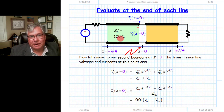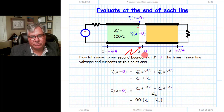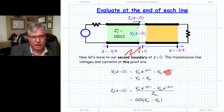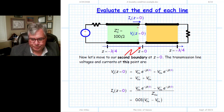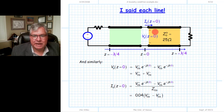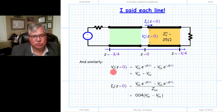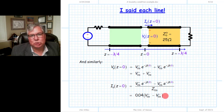Now let's move to the other end of the first transmission line and determine total current IA and total voltage VA at z equals 0. We take our telegrapher equation solution for the first transmission line and evaluate at z equals 0. The complex exponentials become easy to evaluate — simply equal to 1. We repeat the process for the beginning of the second transmission line, also evaluating at z equals 0, inserting into VB and IB.